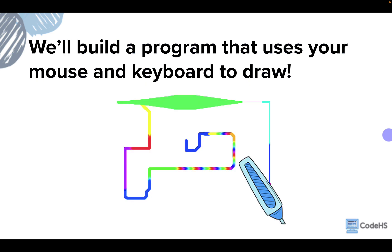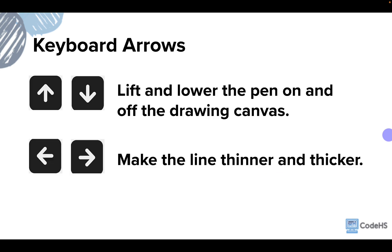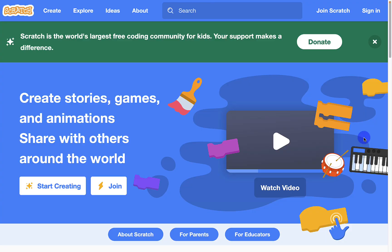We're going to be building a program that uses your mouse and your keyboard in order to draw. This will work with an iPad, but a little bit differently, so you can still follow along on an iPad. The line first is going to need to follow the mouse pointer. We'll also need to lift and lower the pen on and off the drawing canvas, allowing the user to move the mouse to different places to draw in different parts of the canvas. If you have time, we'll make the left and right arrows cause the line to be thicker or thinner. Let's jump right into Scratch.